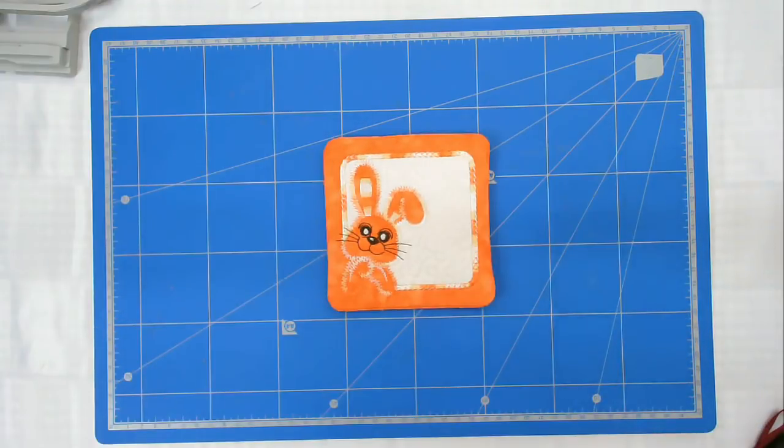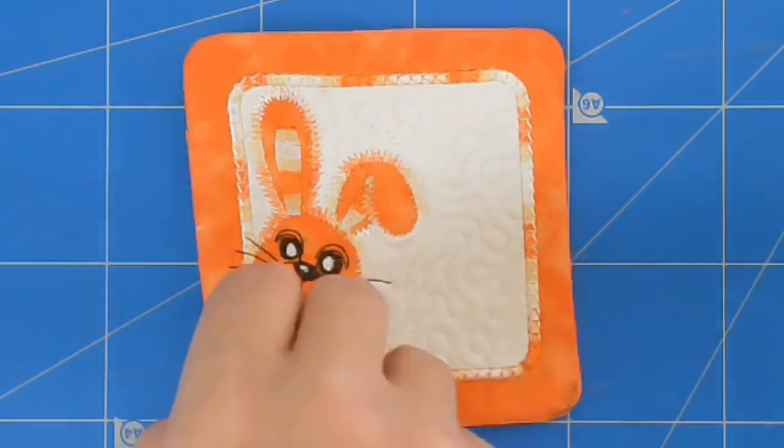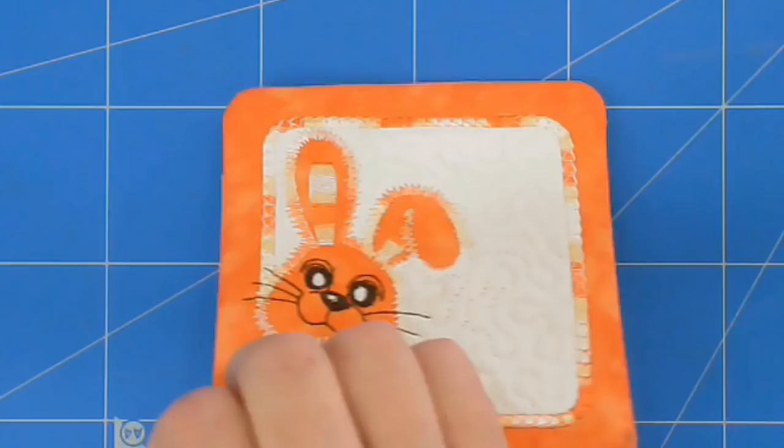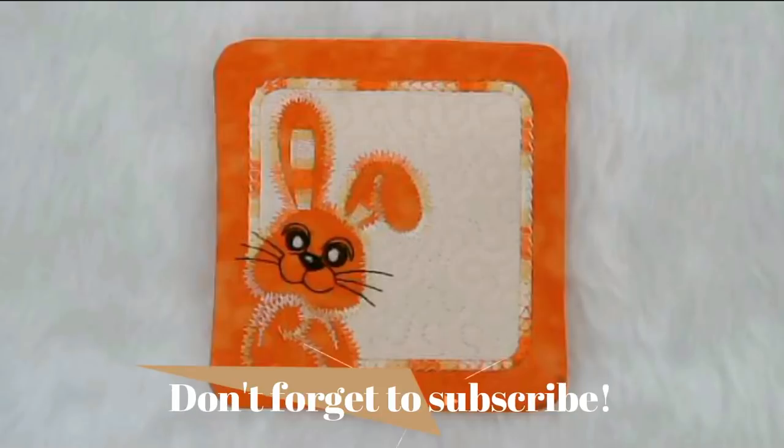I'm going to give him a bit of a press now. And there he is, my lovely bunny mug rug with an envelope back. And there you can see the envelope. I hope you enjoyed this stitch along. If you did please give me a thumbs up. Don't forget to subscribe to be notified of new videos as they publish. And thank you very much for joining me. Bye bye.